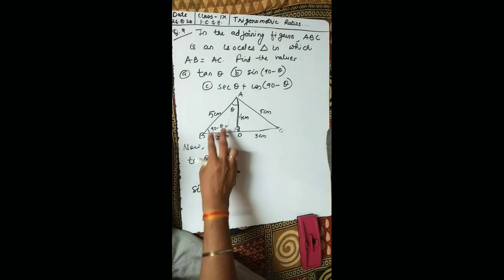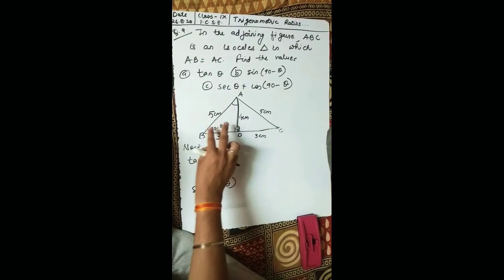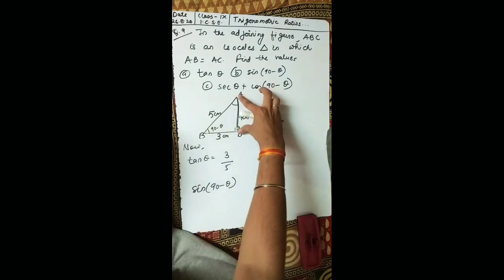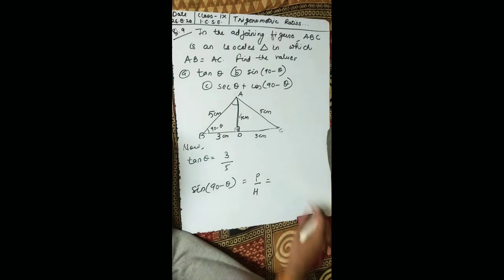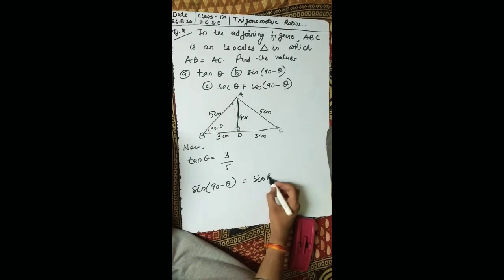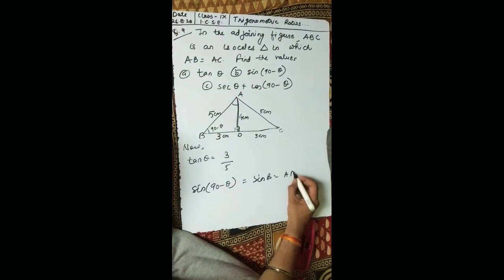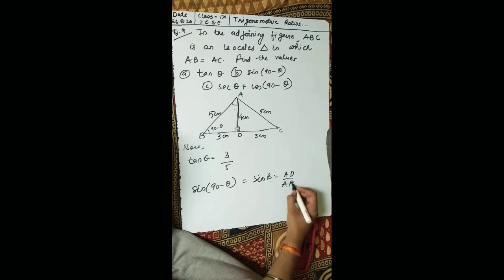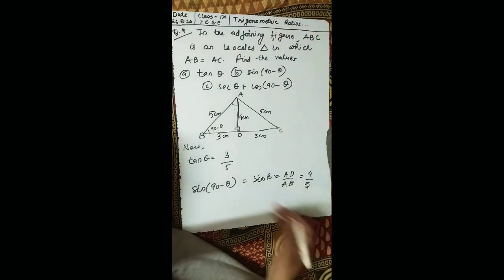For sin(90 minus theta): we established that 90 minus theta is angle B. With theta at B, the opposite side is the perpendicular and the formula is perpendicular upon hypotenuse. AD is 4 and AB is 5, so sin(90 minus theta) equals 4 upon 5. You can complete the remaining parts similarly.